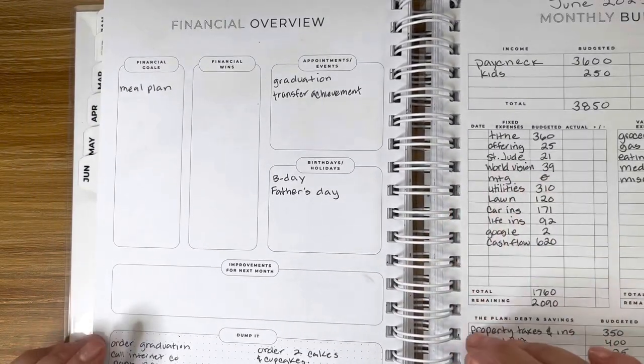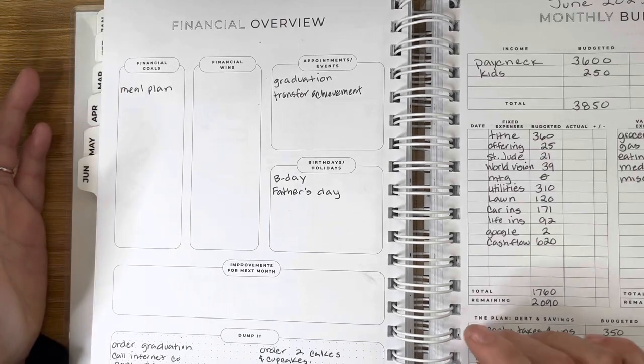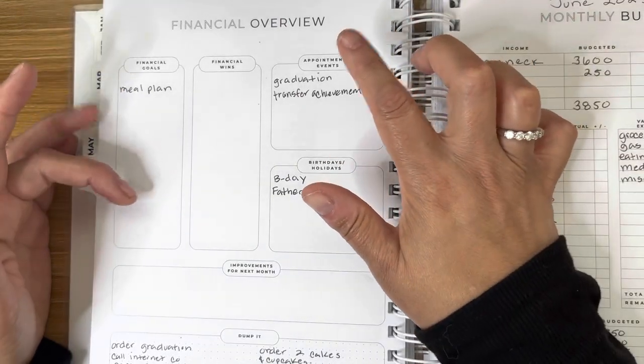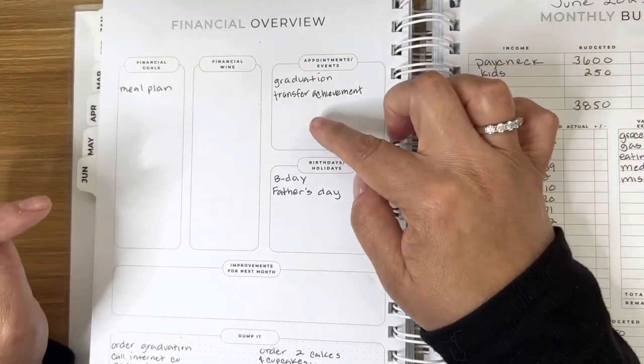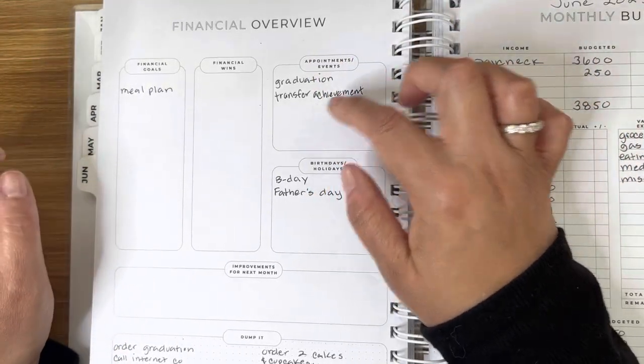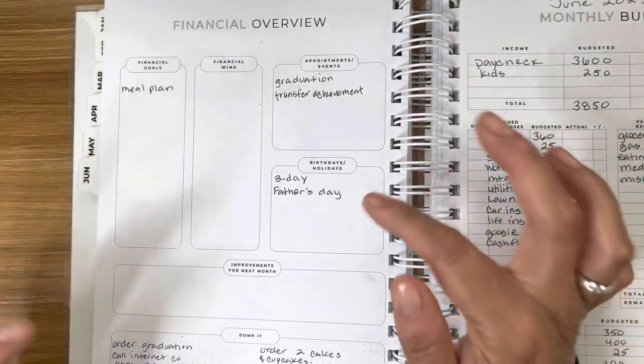Financial overview. I want to continue to meal plan. I have a graduation to attend. Well, that already happened. And then there's also a transfer achievement ceremony that already happened. I have a birthday, and then we have Father's Day.